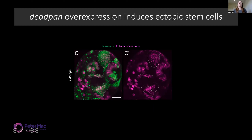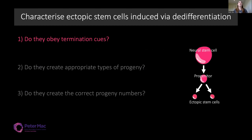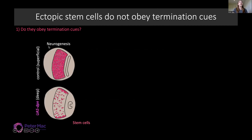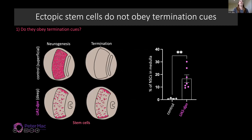With these ectopic stem cells, I wanted to start answering the questions I mentioned previously. The first was whether they could obey termination cues. I compared these to the superficial wild-type neurostem cells and looked at a time when those wild-type cells usually terminate. What I found was that at a time when all wild-type neurostem cells were gone, we still had the presence of ectopic neurostem cells — significantly increased compared to the control. This suggests that ectopic stem cells aren't obeying termination cues, and this could be why some are able to form tumours.